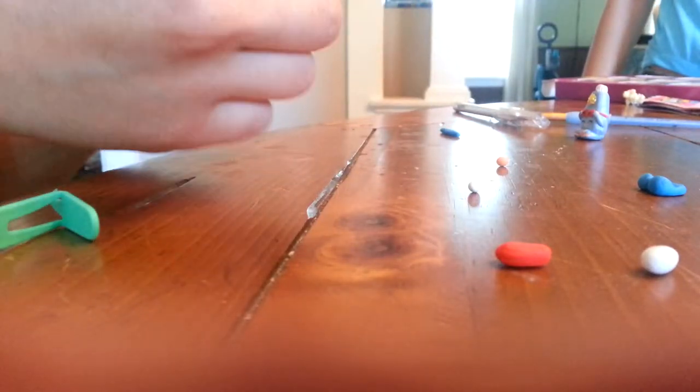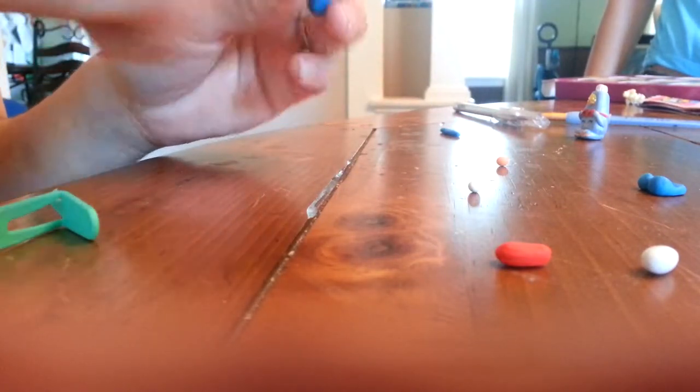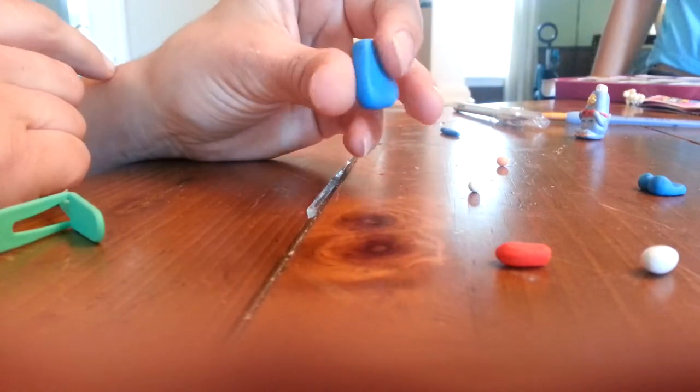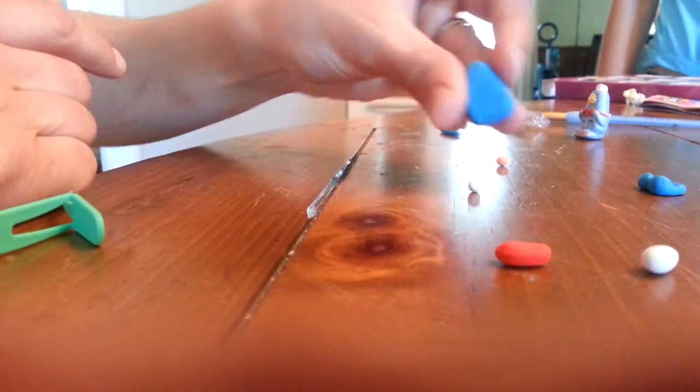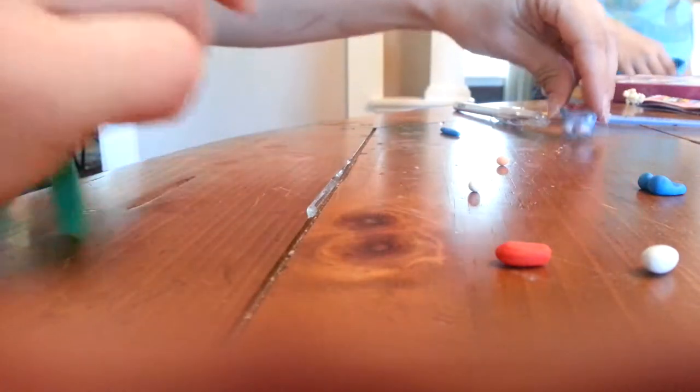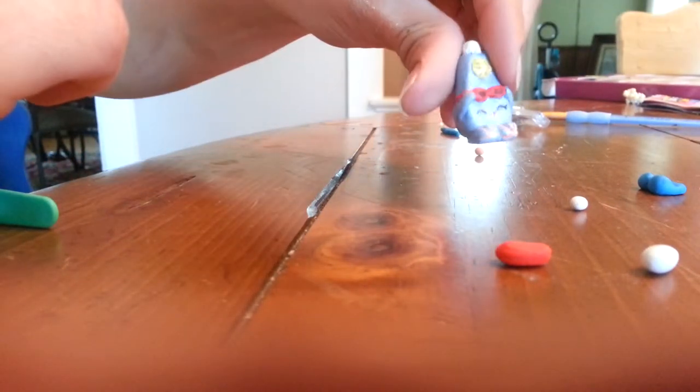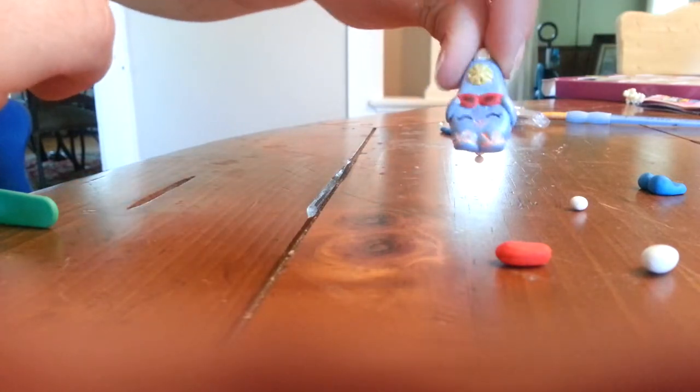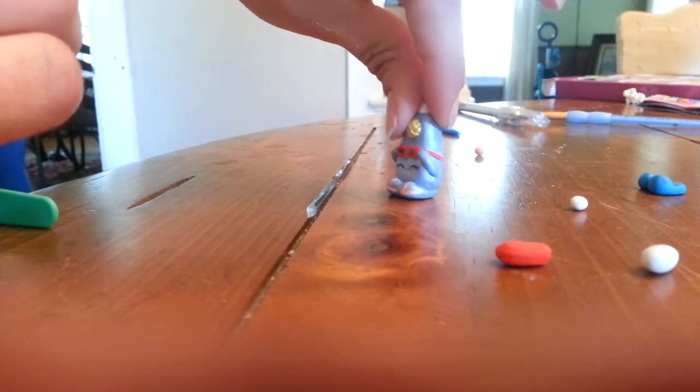Hey guys. So I've gotten a few requests lately on how I make my Shopkins figures and my little clay figures. So today I'm going to show you how I make my Sunny Sunscreen. And if you can see here is one that is already made and painted and glossed. So he's pretty cute.